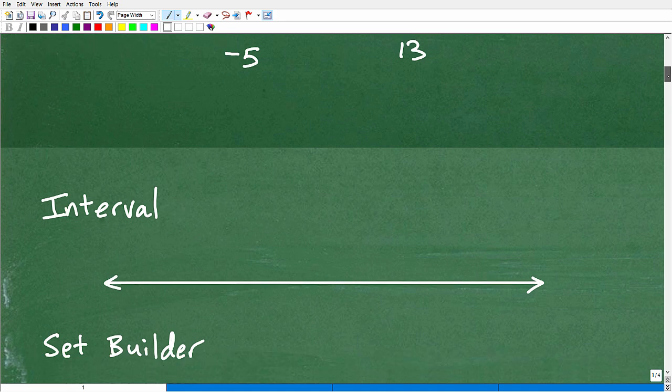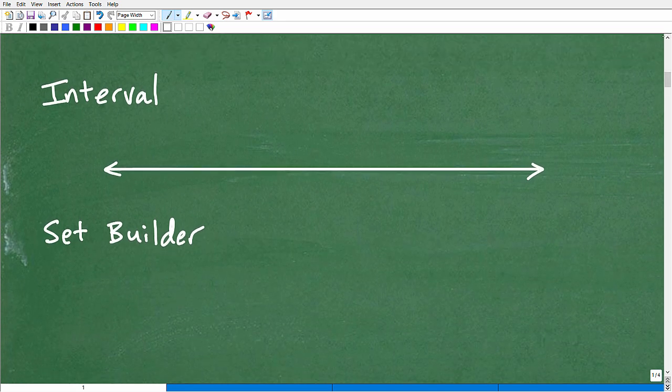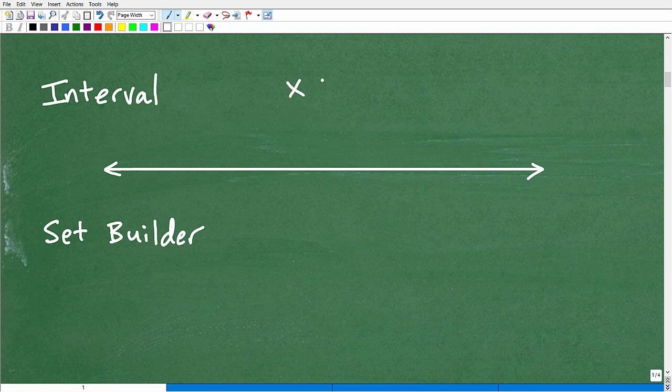All right. Now let's talk about set builder notation. So let's do a couple things here. Let's do x is greater than 2. Okay. So the interval notation, what I just was doing here, would be 0 for example, and this would be 2. So we're going to draw a little circle at 2, and this is saying what? All numbers greater than 2.